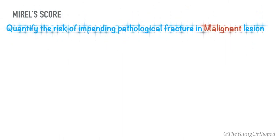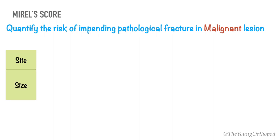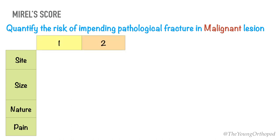The Mirel's score is used to quantify the risk of impending pathological fracture in a malignant lesion. It is based on four variables: the site of the lesion, the size of the lesion, the radiographic appearance of the lesion, and the presence and quality of associated pain. All variables are assigned progressive scores ranging from 1 to 3.